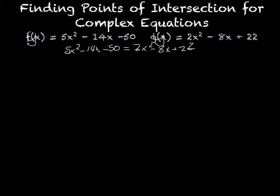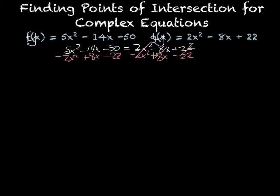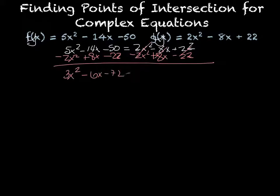Now, putting all like terms together — subtract the 2x², add 8x, and subtract 22 — what we then have is 3x² − 6x − 72 = 0.